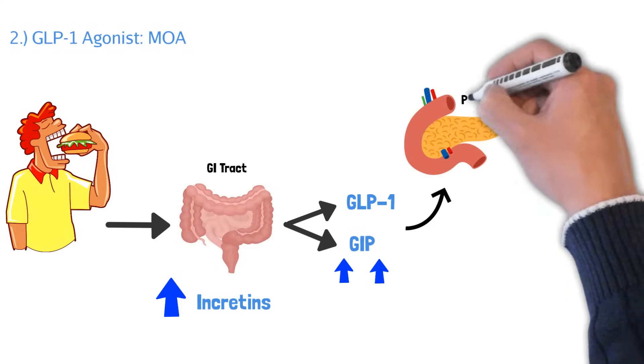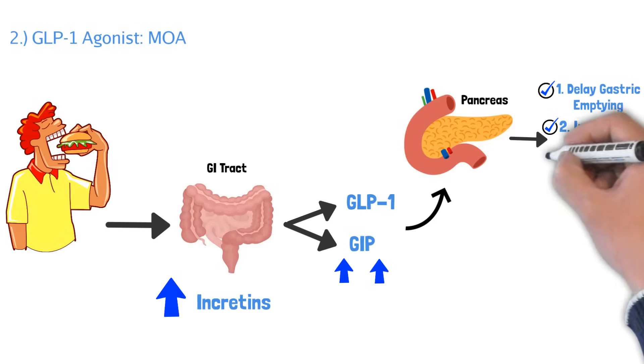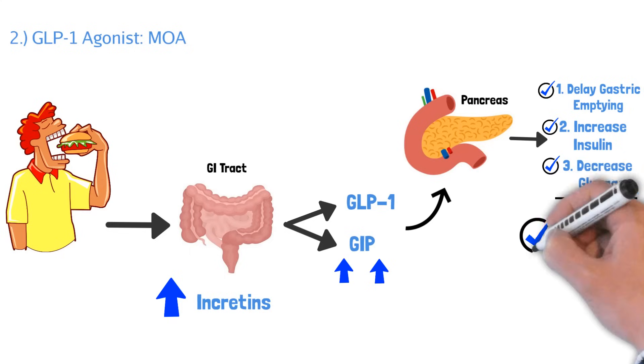These incretins can go to your pancreas and they can cause multiple things to happen. First, it can actually delay gastric emptying, meaning the food sits in your stomach a little bit longer. It can also increase the insulin production from your pancreas and the pancreas releases it through their beta cells and these GLP-1 and GIP incretins can also decrease the actual glucagon that your liver makes. So we have multiple different things that these incretins can do. Overall, all three of these, they decrease blood glucose levels.